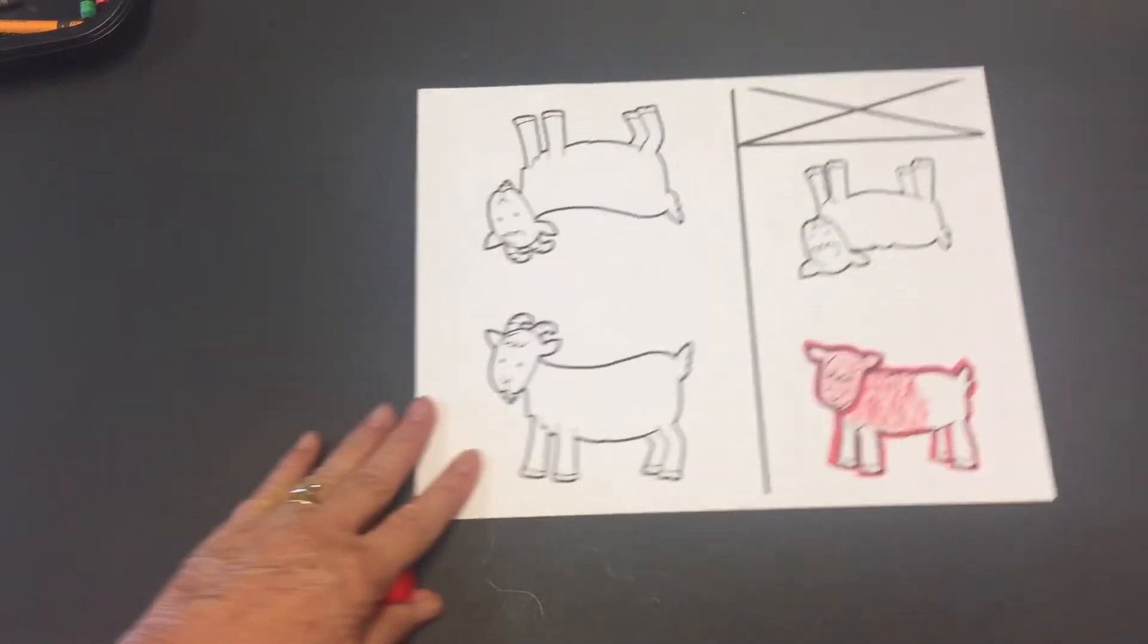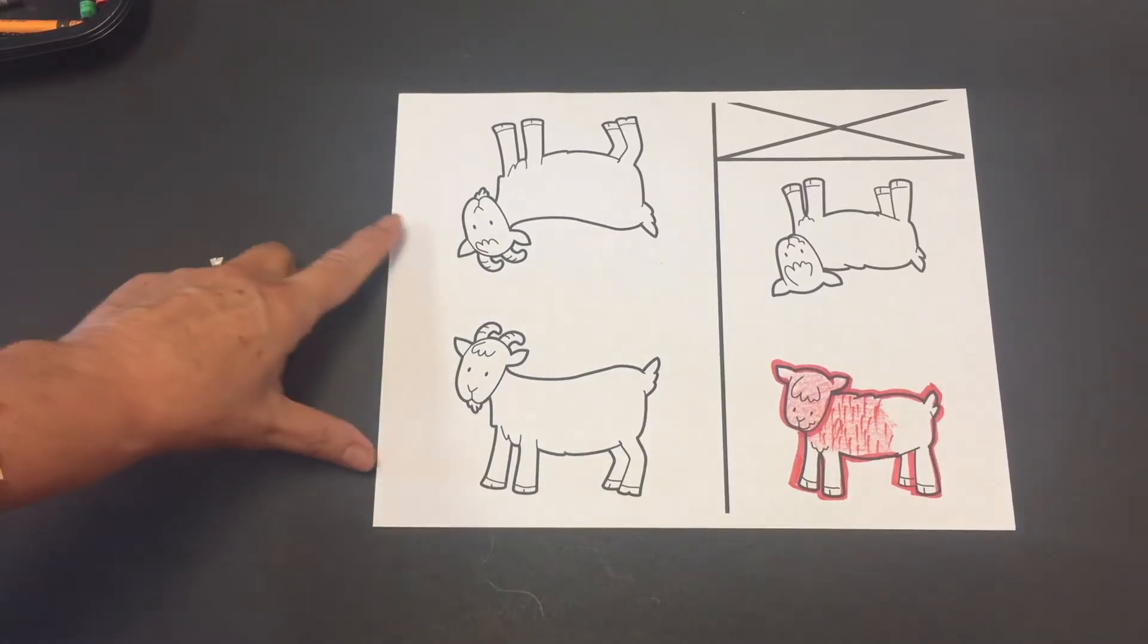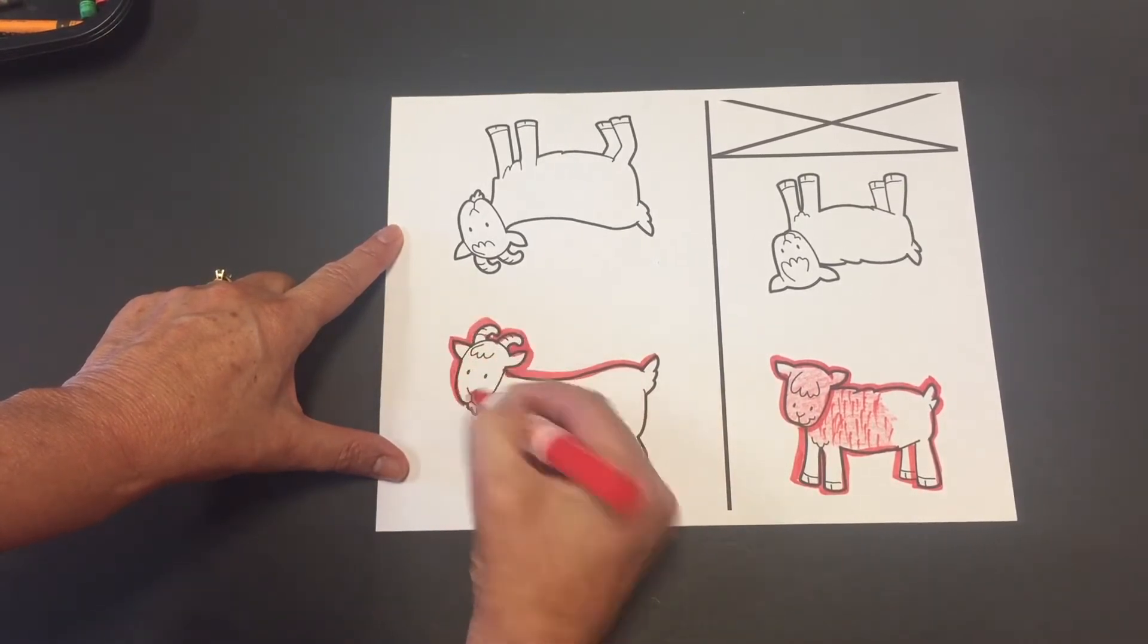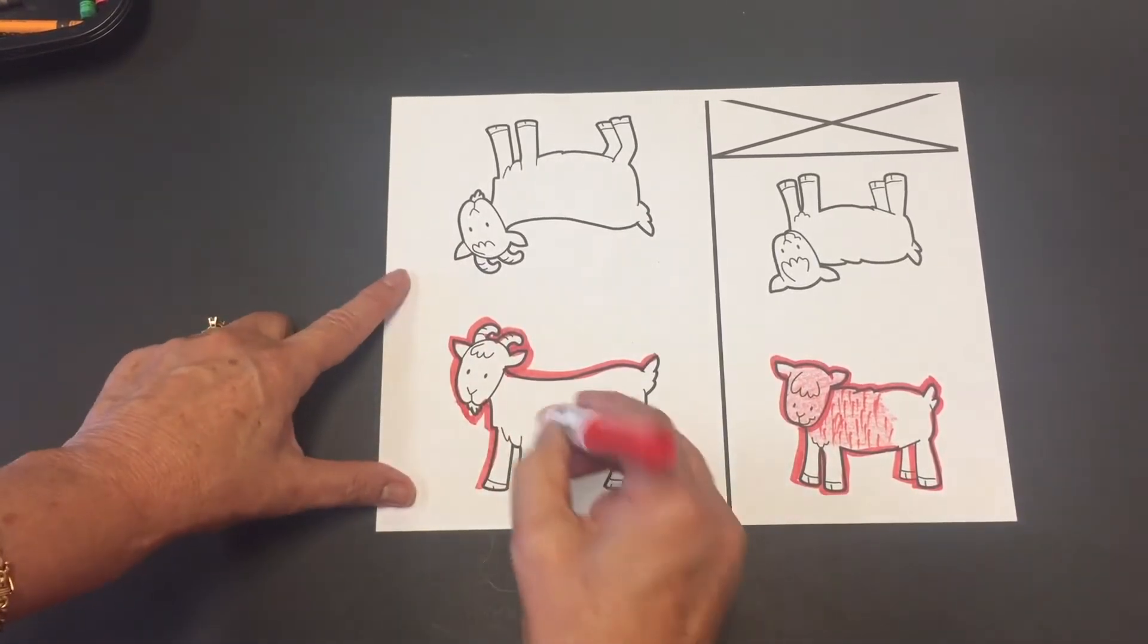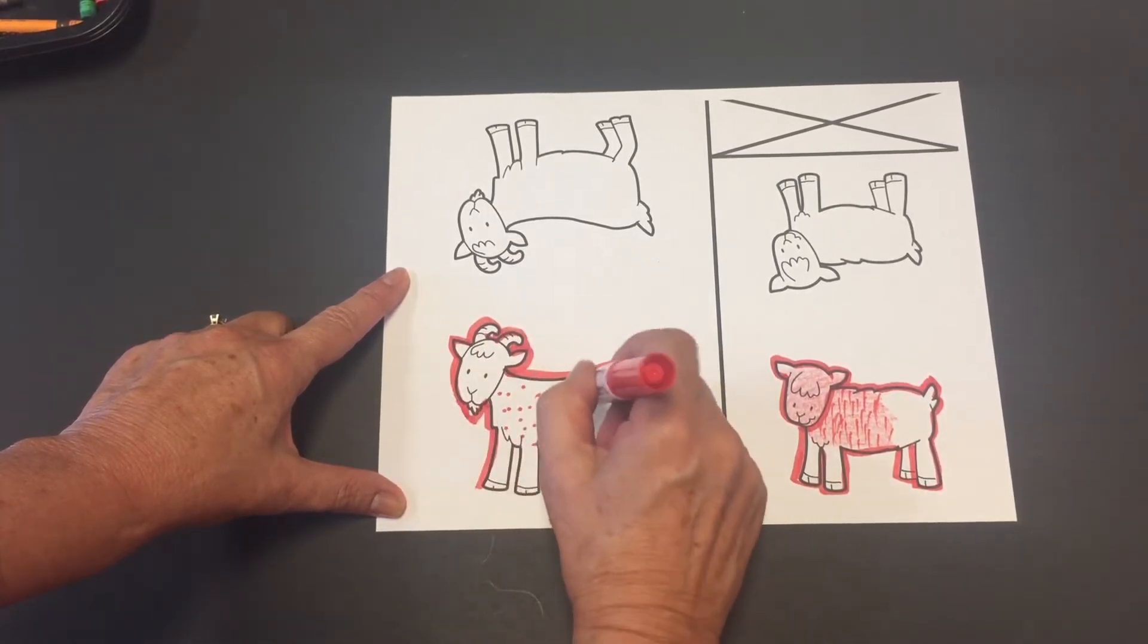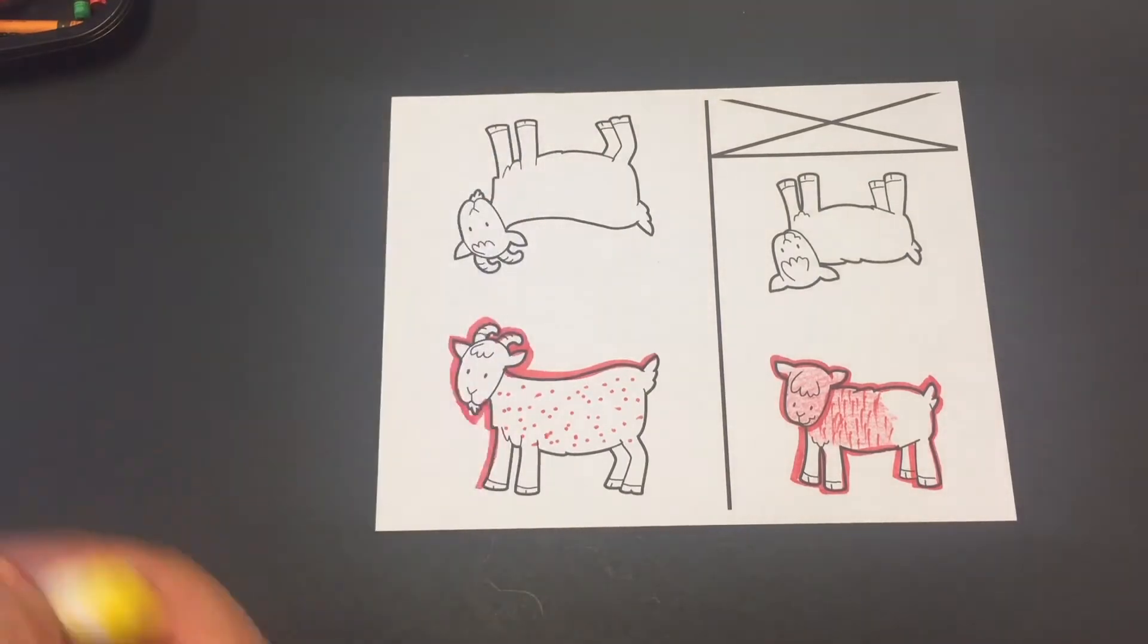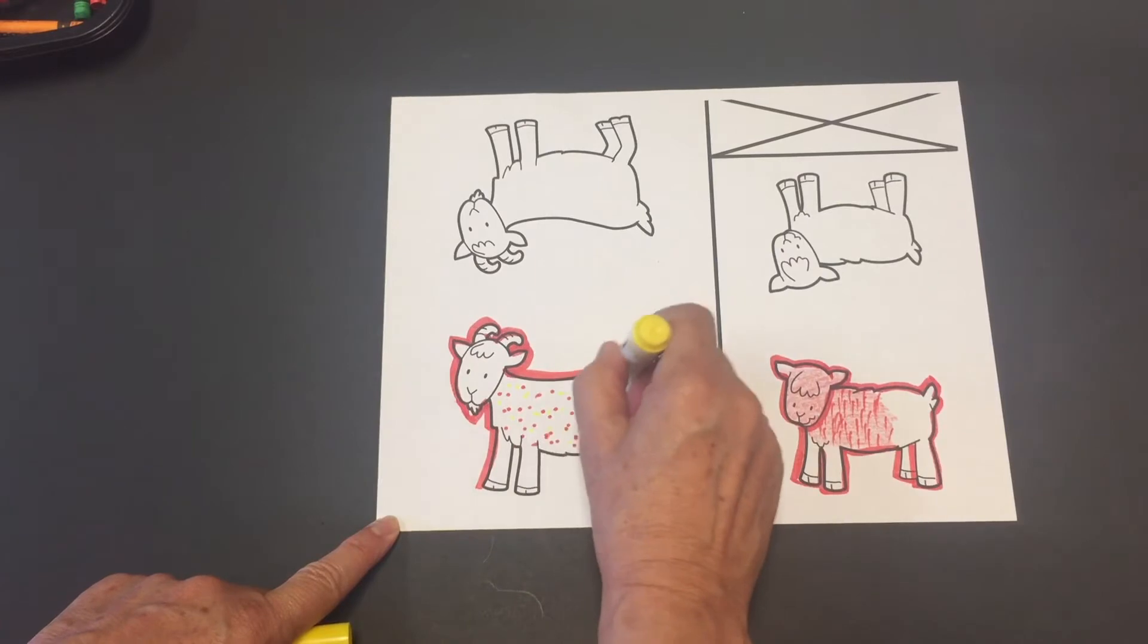The other technique is called Dot It. I call it Confetti Technique. And what I do is I also outline my goat like that, the same way. And I'm only going to do a little piece right now. And then what I do inside the goat is I just dot it like that, confetti like that, dot dot dot. And I can choose to do one color or add more colors to make it like a fiesta, a fiesta goat.